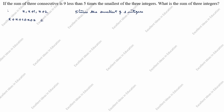For example, we will take x equal to 1. So x is 1, 1 plus 1 is 2, and 3. Which one is the smallest? x is the smallest. So 5 times the smallest of the three integers is 5 times x, which gives 5x. And 9 less than 5x is 5x minus 9.